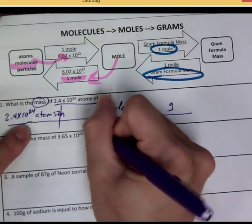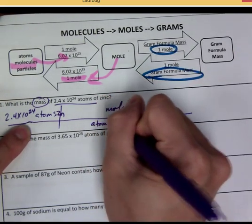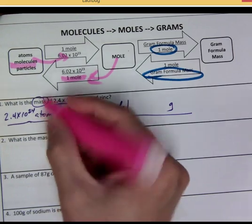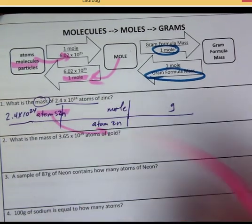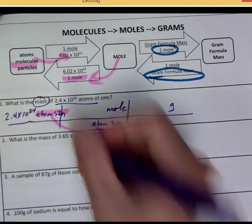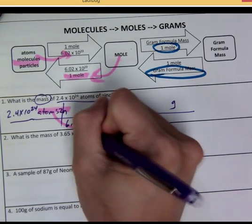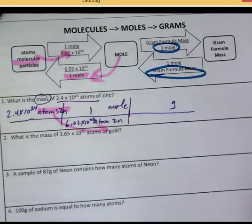So then atoms of zinc go down to the bottom of the next one. All right, follow that pattern, always. Whatever you start with, bring it to the bottom of the next one. How many atoms? 6.02 times 10 to the 23rd is equal to 1 mole of zinc.